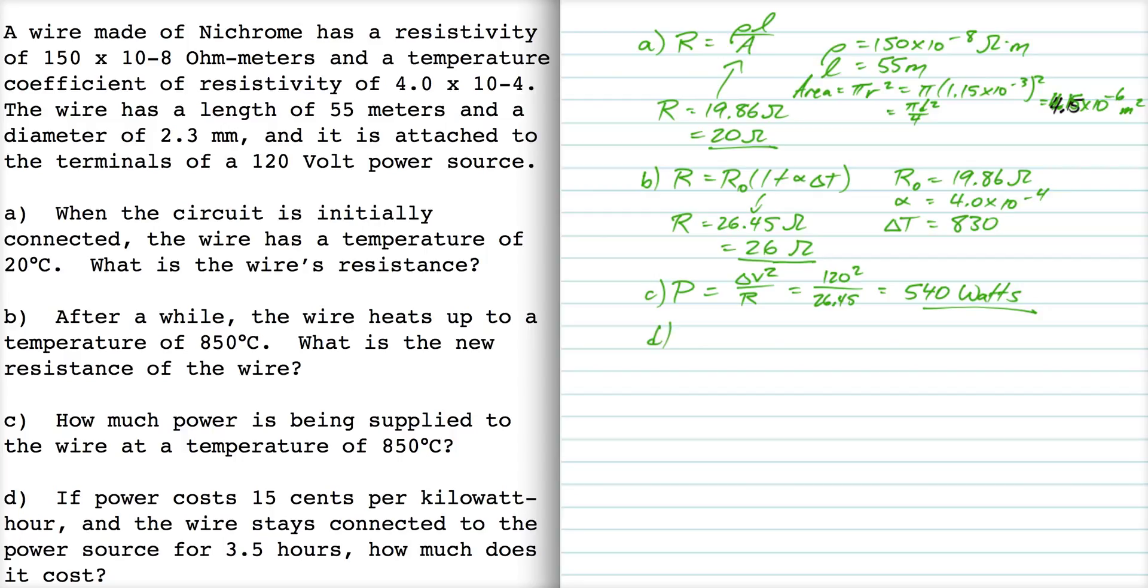Part D is asking, it says power costs 15 cents per kilowatt hour, and the wire stays connected for three and a half hours, how much does it cost? So what we need to find here, that 15 cents per kilowatt hour is a cost for energy.